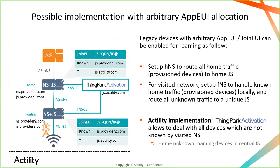This system will also deal with the arbitrary AppEUI allocation issue we have with legacy devices. The way to handle these devices is to configure visited and home network servers to use their internal join server for everything they do at home — this doesn't need changing, it works. For anything unknown — presumably roaming devices with arbitrary AppEUIs not referencing a single join server — we route them to the Syncpark activation service. If the device has been provisioned in the service, it will be able to join, and the visited network will discover the home network and activate the device away from home.